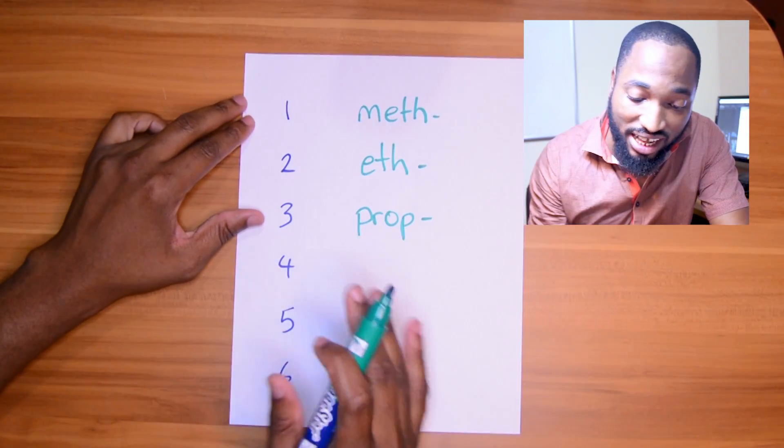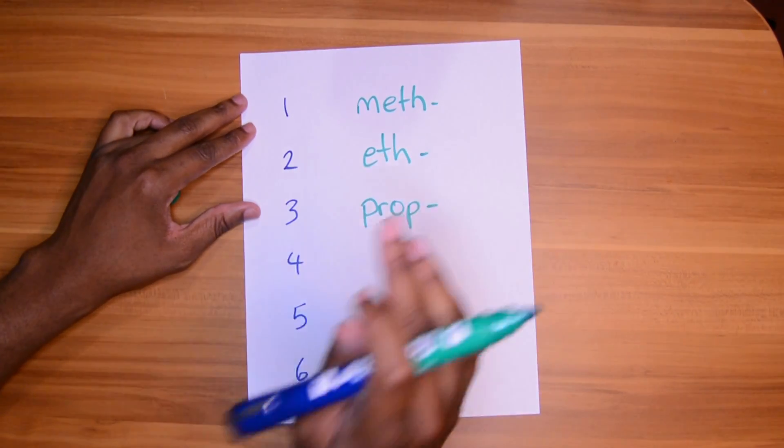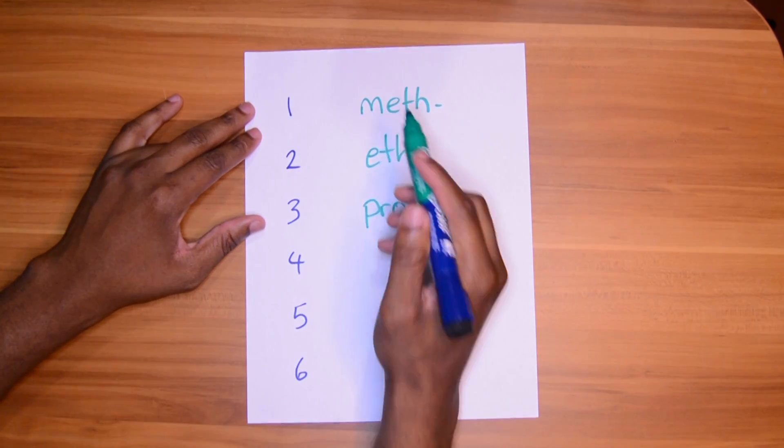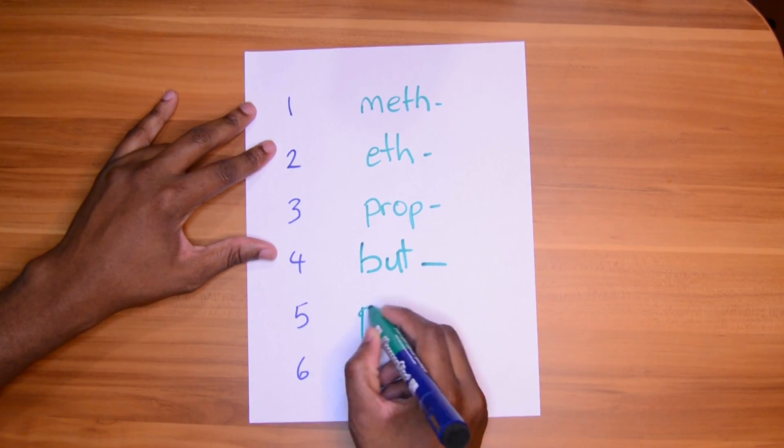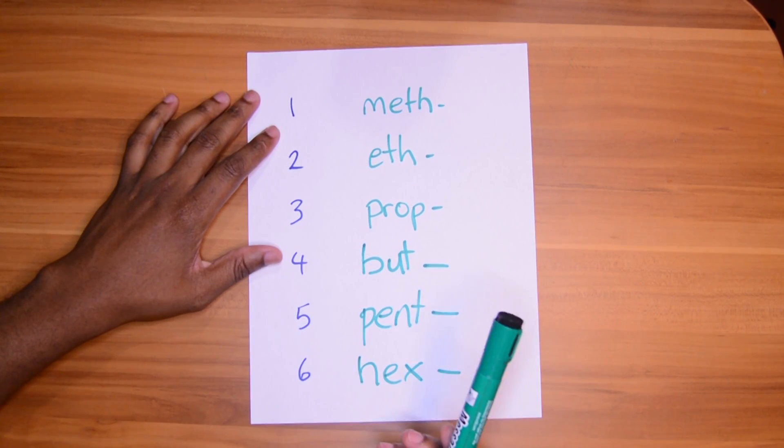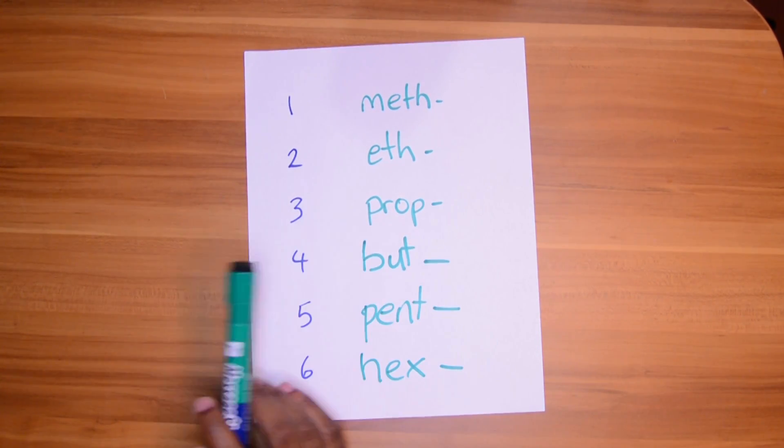This is the start of everything: methane, ethane, ethene, propanal, propanol, propanoic acid. This is the start: meth, eth, prop, but, pent, and hex. For some reason, students mix up prop and but. Prop, but. Mix it up all the time. I used to mix it up too.